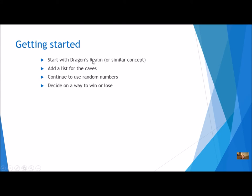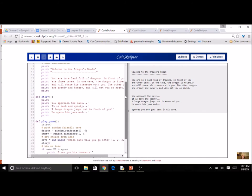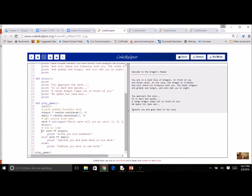It can still have dragons in caves, or it can be something along that same line but maybe different — instead of dragons, it could be something else. We're going to add a list for the cave. Right now we just used random numbers. We're going to continue to use random numbers and decide on a way to win or lose. Let's take a look at our Dragons' Run from Chapter 2.